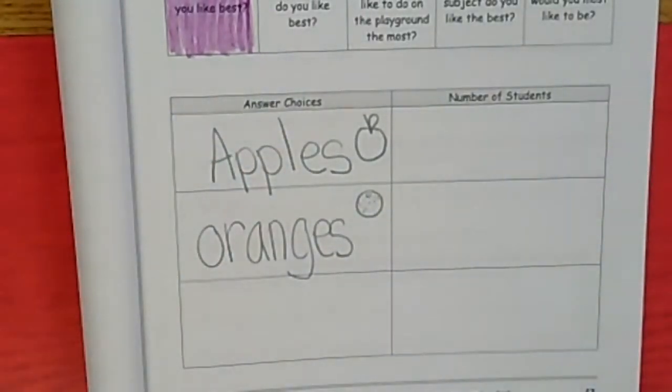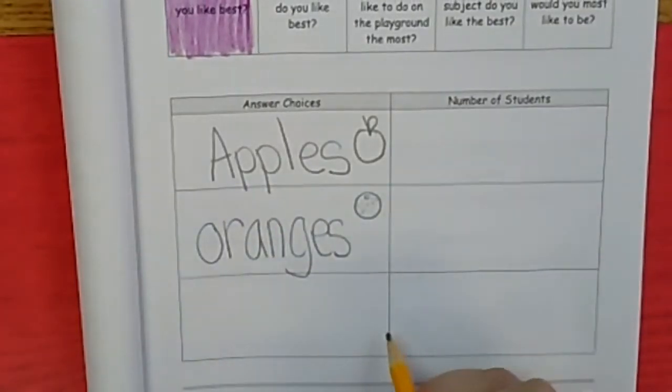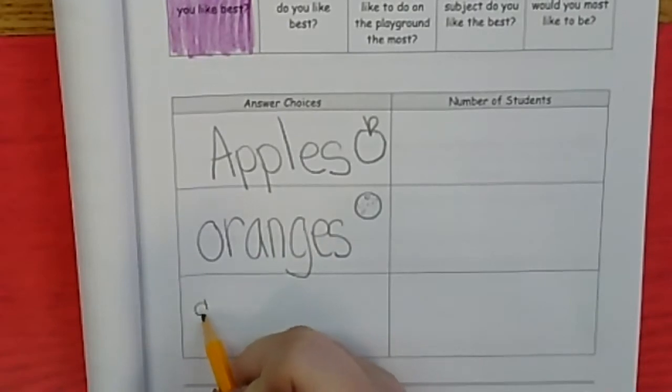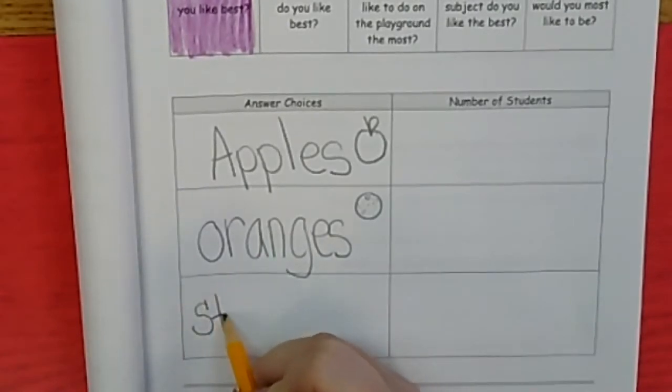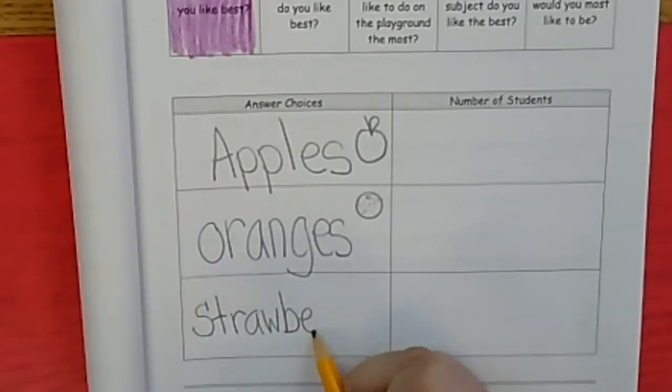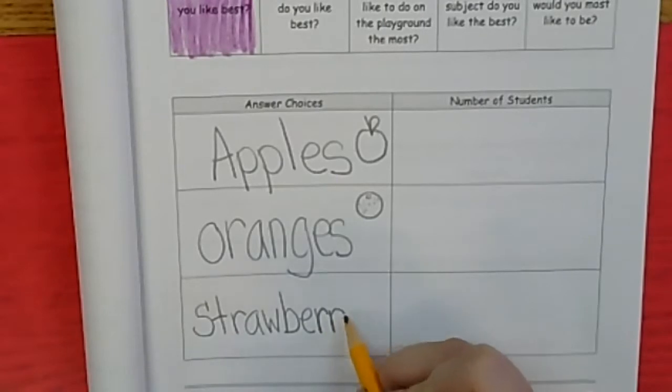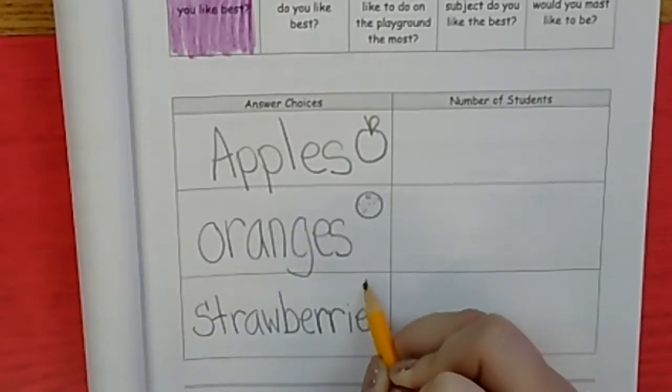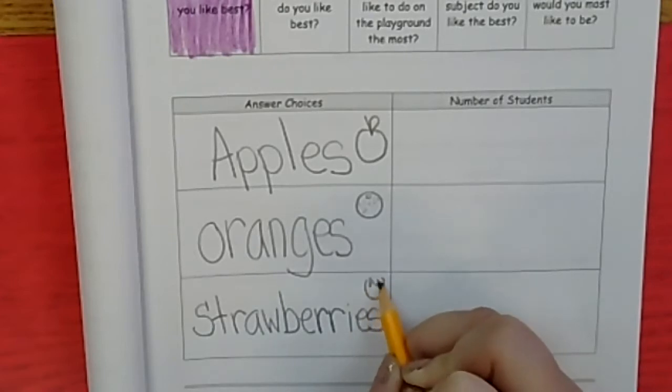And the last one I asked if they liked was strawberries. So strawberries is a long word. I'll try to write it small so it fits. S-T-R-A-W-B-E-R-R-I-E-S. I'm going to draw my little strawberry and I'll draw the little seeds.